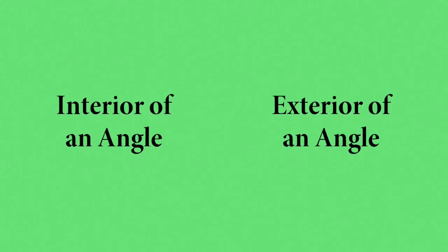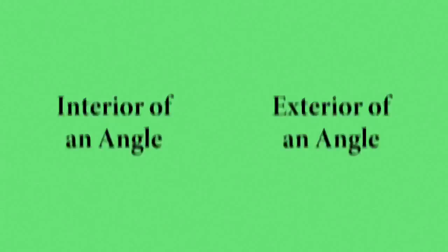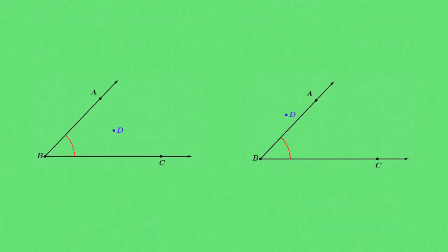All angles divide the plane into two separate areas: the interior of the angle and the exterior of the angle. On the left, the point D is on the interior of the angle ABC, and on the right, the point D is on the exterior of the angle ABC.